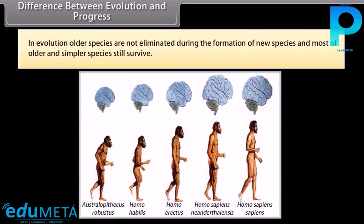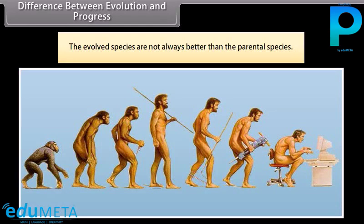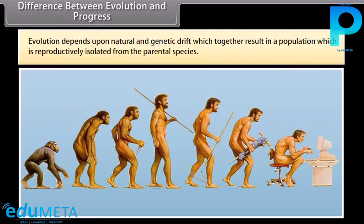In evolution, older species are not eliminated during the formation of new species, and most older and simpler species still survive. The evolved species are not always better than the parental species. Evolution depends upon natural selection and genetic drift, which together result in a population that is reproductively isolated from the parental species.